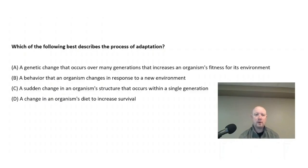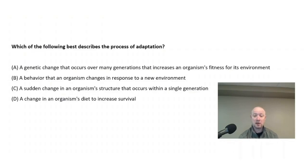Which of the following best describes the process of adaptation? Is it A, a genetic change that occurs over many generations that increases an organism's fitness for its environment? B, a behavior that an organism changes in response to a new environment? C, a sudden change in an organism's structure that occurs within a single generation? Or D, a change in an organism's diet to increase survival?